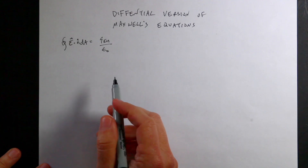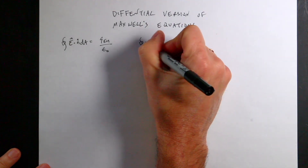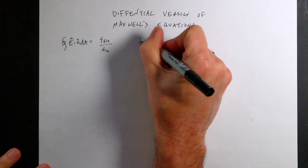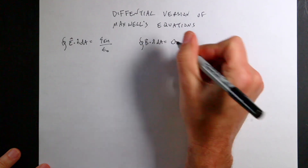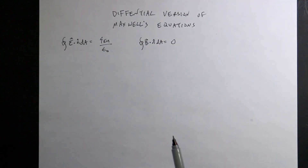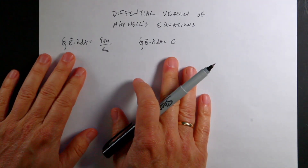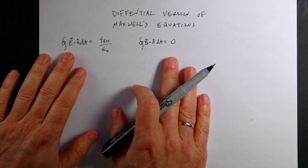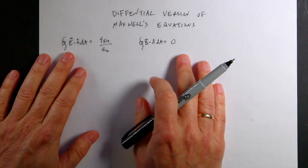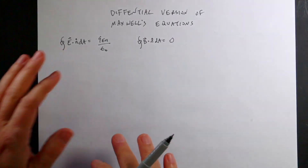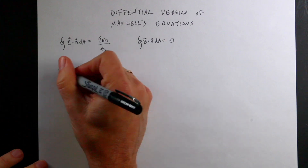The next one is Gauss's law for magnetism. It says the magnetic flux through a closed surface, B dot N-hat dA, is zero. It's zero because we don't have individual magnetic charges — we don't have magnetic monopoles — so there's no equivalent term on the right-hand side.